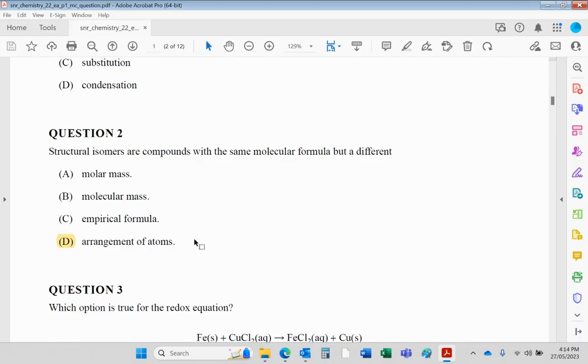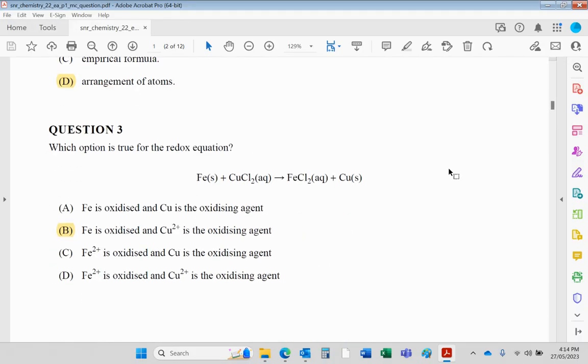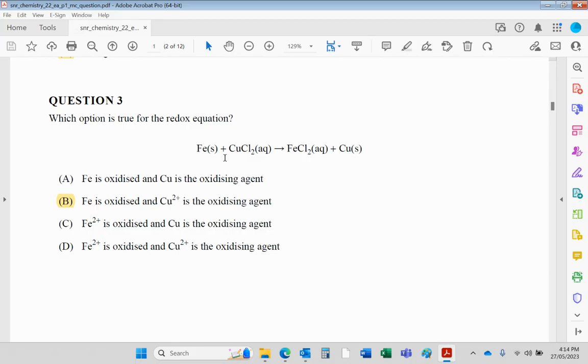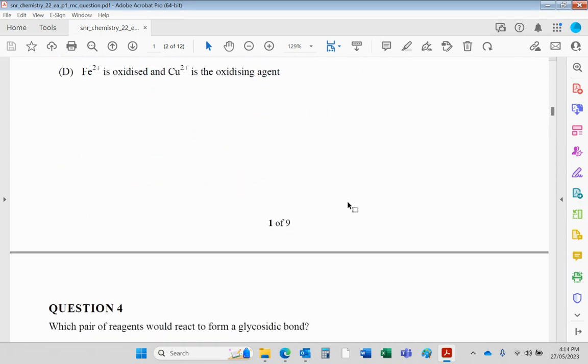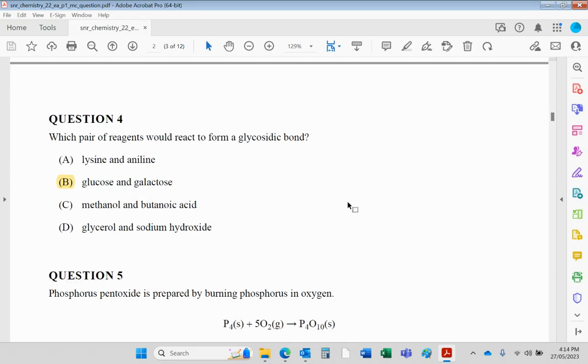Redox reaction: iron is clearly displacing copper from a copper compound in this reaction. Iron is being oxidized—it's going from zero to plus two. Cu2+ is the oxidizing agent. Iron is the reducing agent. So Fe is oxidized and Cu2+ is the oxidizing agent. Hopefully these are straightforward at the moment. If I think it's tricky, I'll spend a bit more time on it.